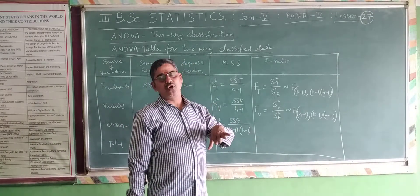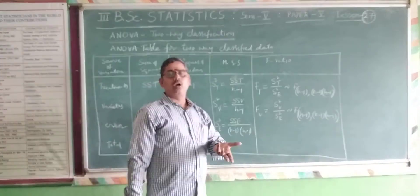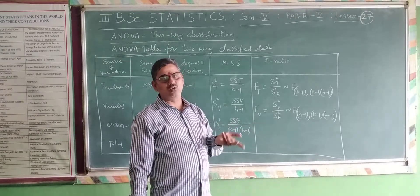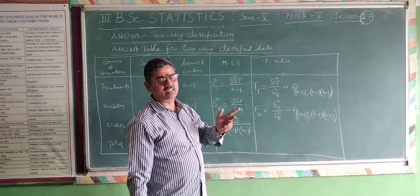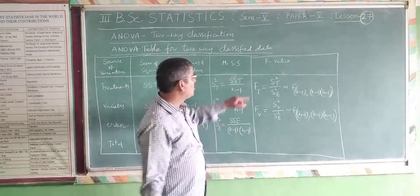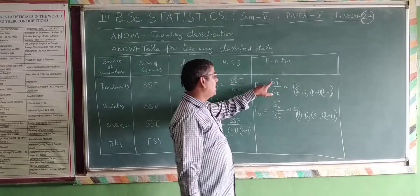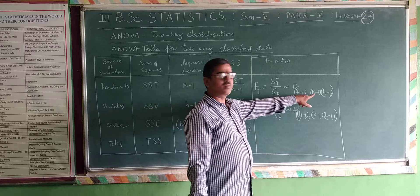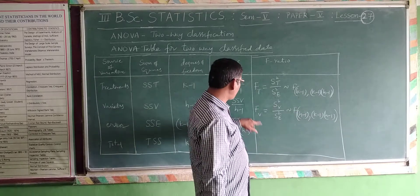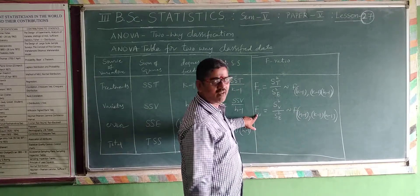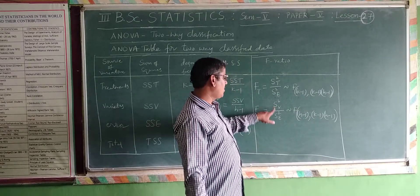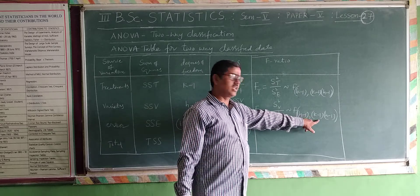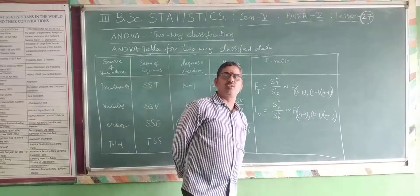Now we have to calculate two test statistics separately — two F-ratios separately. Ft equals SST divided by SSE, which follows F with K minus 1 and (K minus 1)(H minus 1) degrees of freedom respectively. And Fv equals SSV divided by SSE, which follows F with H minus 1 and (K minus 1)(H minus 1) degrees of freedom respectively.